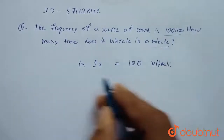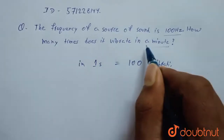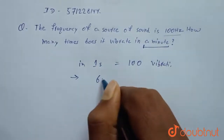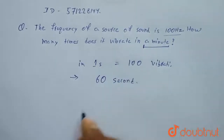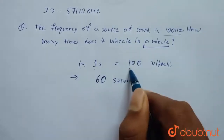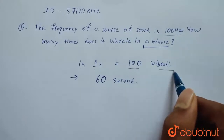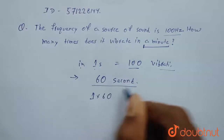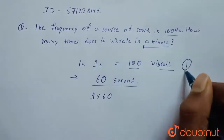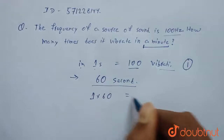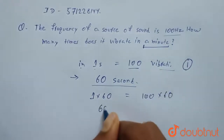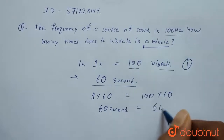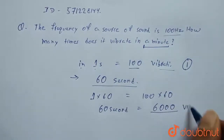So what will be the number of vibrations in a minute? As you can see, in a minute there are 60 seconds. So in one second we have 100 vibrations, and in 60 seconds we will have 100 multiplied by 60. So in 60 seconds we will have 6000 vibrations.